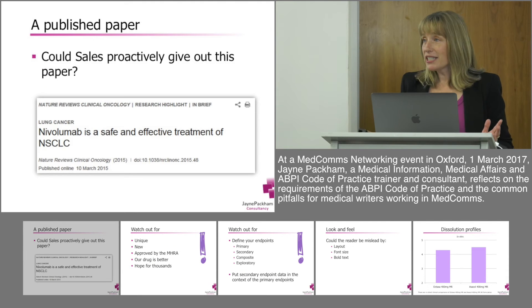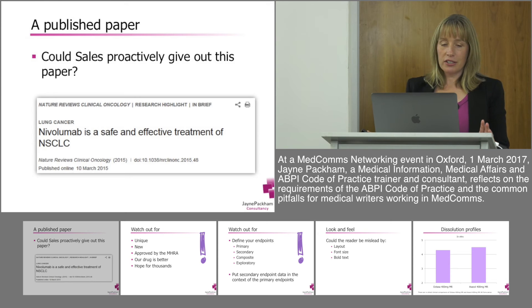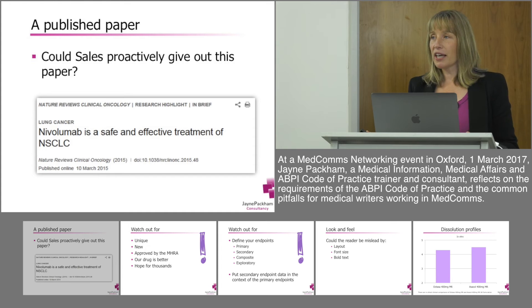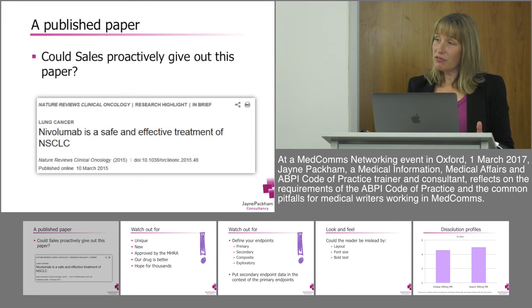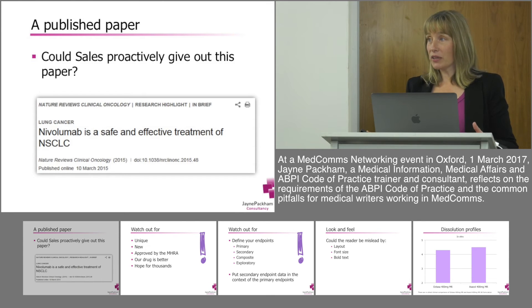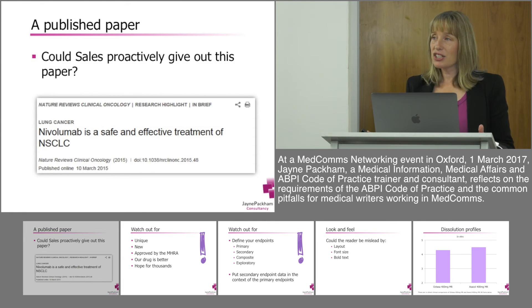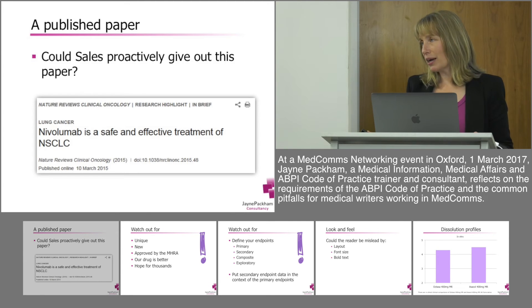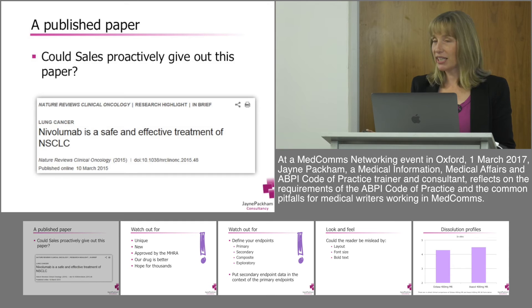Quite often you'll find in writing that people talk about a drug being 'generally well-tolerated' — it feels a little bland, but that's the origin of why that term is used in preference to some of the more emotive terms. So if you're writing a manuscript, something like 'this drug is a safe and effective treatment for this condition' might seem like the best attention-grabbing title, but could sales proactively give out that paper? The answer would be no, because that word 'safe' is in it — it would not be code compliant, and that would prohibit your salespeople proactively giving it out. It could still be given out through a medical information department on request, but not proactively.